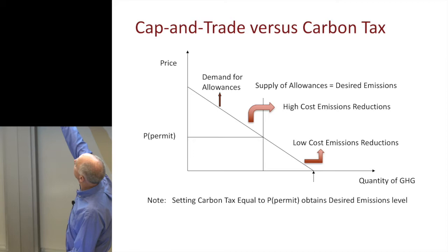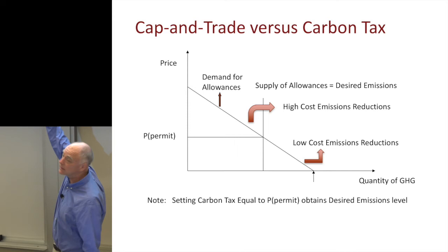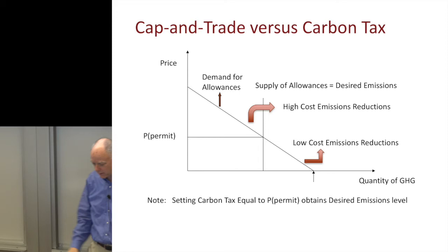Think of it this way: if we did no abatement, here's how many emissions we would have. As we spend money on abatement — reducing output, making investments — we get progressively fewer emissions, until the total abatement brings emissions down to equal the cap. That's what sets the allowance price.